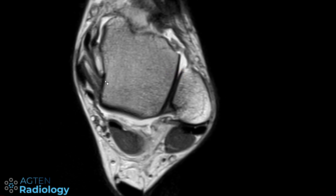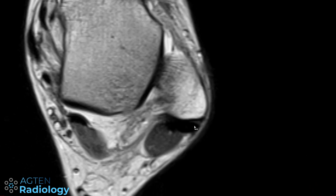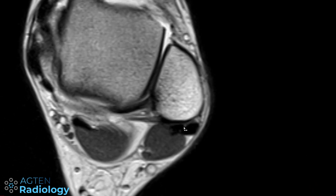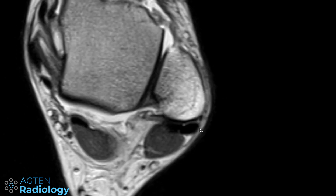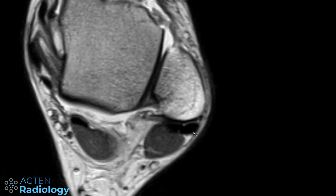Let me show you a normal superior peroneal retinaculum. We zoom in a little bit. We have the peroneus longus tendon here and the peroneus brevis tendon here. One easy way to remember which is which: the peroneus longus, abbreviated PL, lies posterolaterally — so posteriorly and laterally. The superior peroneal retinaculum attaches here onto the periosteum of the fibula or malleolus lateralis.